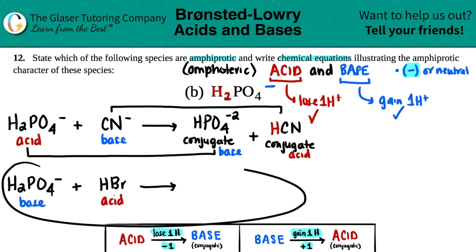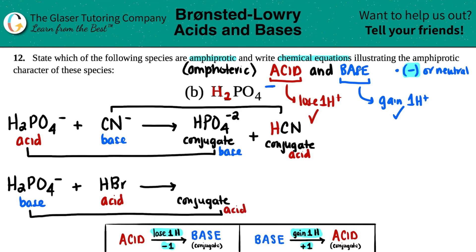Now we just have to do the same thing for the other one. So if this is now acting as a base, it's going to come in and turn into its conjugate, it's got to be the other one. So its conjugate acid. And then vice versa, the HBr that was an acid will turn into its conjugate base. You guys are getting the idea.